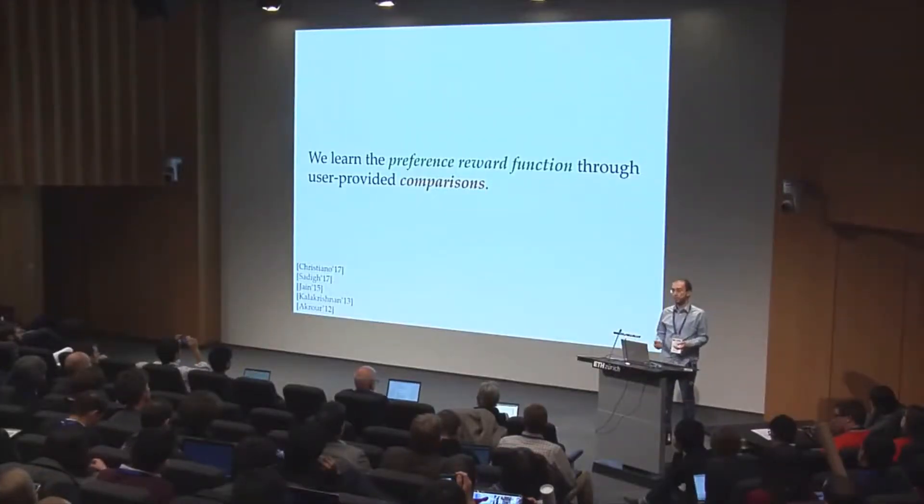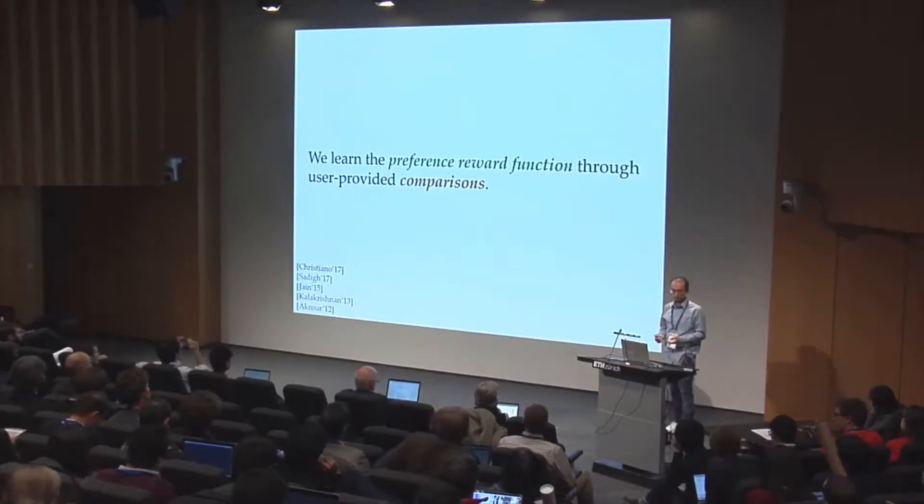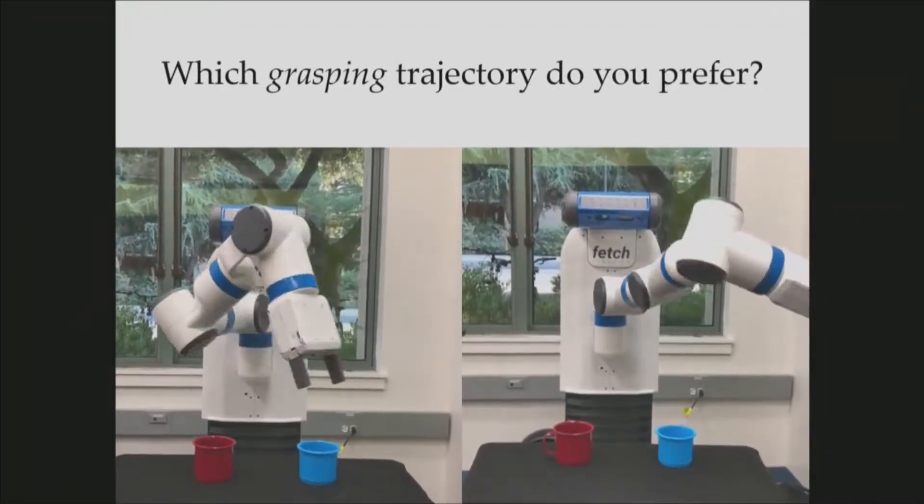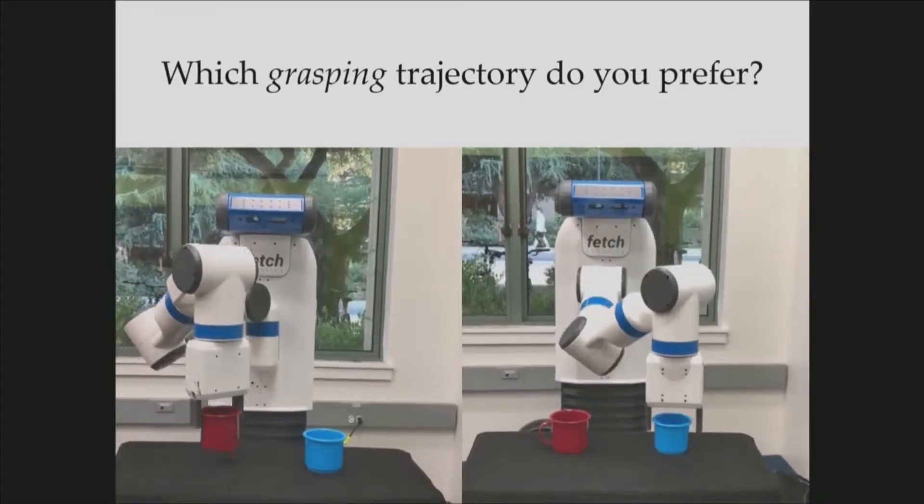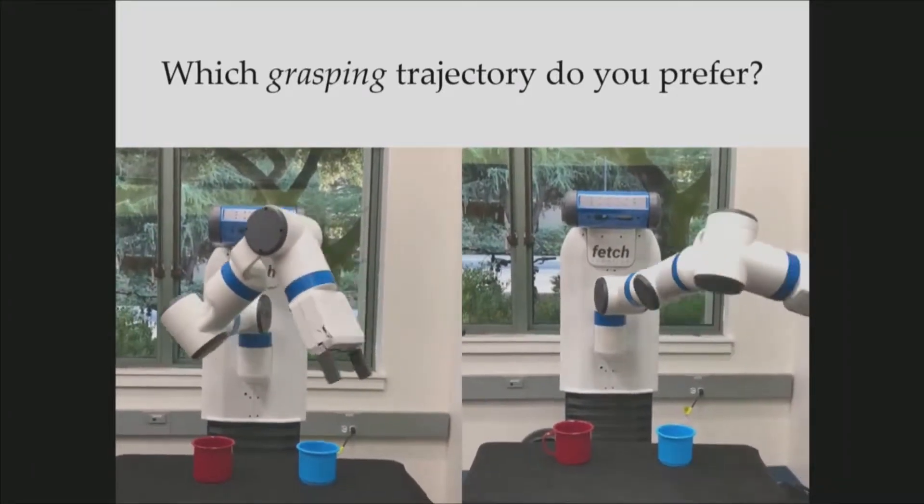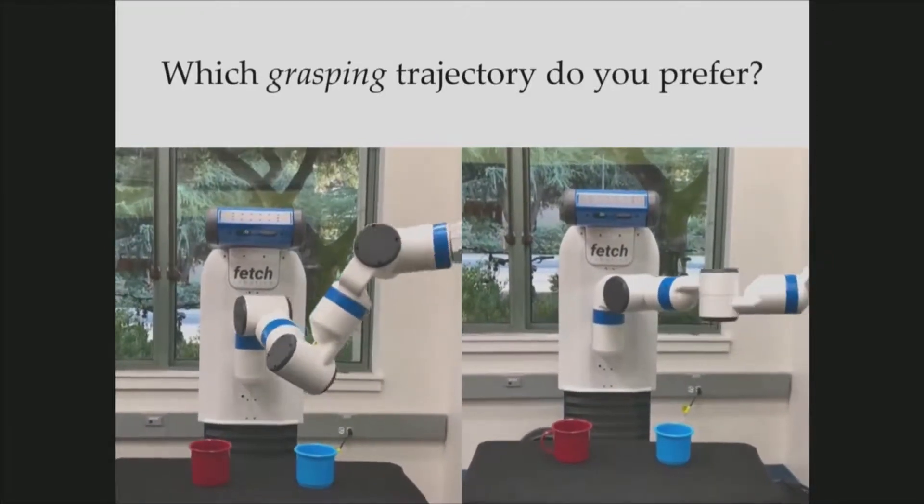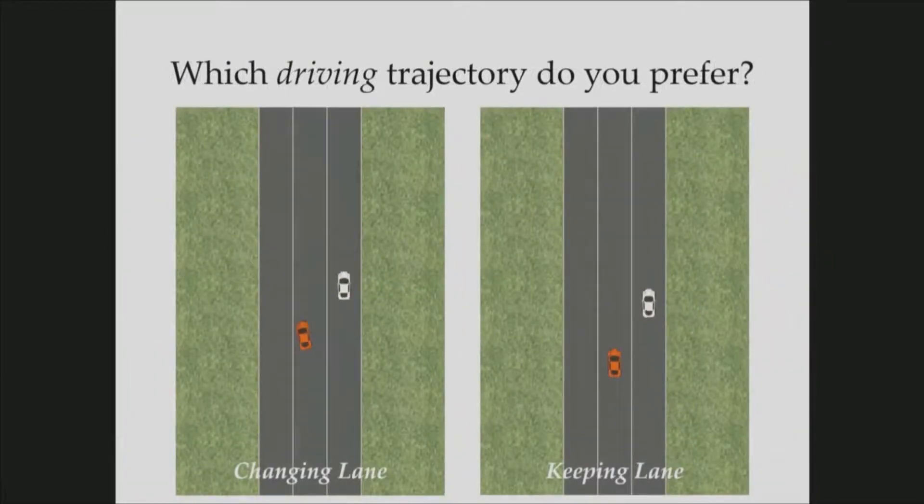So as in many other works, we are going to use pairwise comparisons as opposed to demonstrations to learn human preferences. A simple comparison can be between fetch picking different objects. For example, it can grasp the red cup or the blue cup. And the human's response will tell us about the human's preference on the color of the cup. Or the comparisons can be much more complex. For example, we can compare two different driving trajectories to learn the human's driving style.